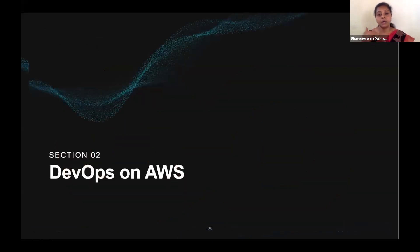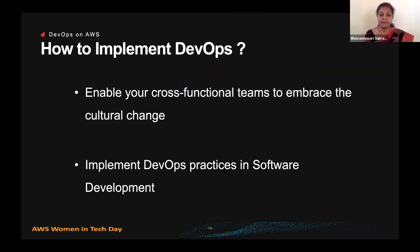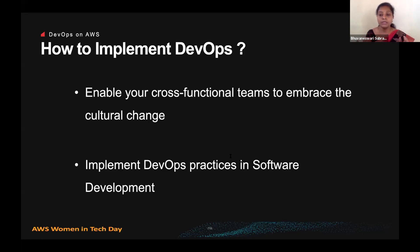With that overview of DevOps, let's look at how DevOps on AWS works and what tools are available. To implement DevOps, we are talking about enabling your cross-functional teams to embrace a cultural change. Your organization first needs to change its culture and mindset to primarily focus on collaboration at a cross-functional level.